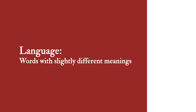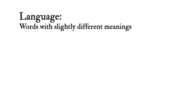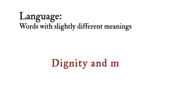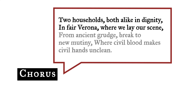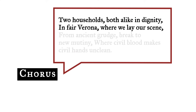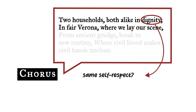Sarah, one thing I noticed about Shakespeare's language is that he sometimes uses familiar words, but in a different way. Take the words dignity and mutiny, for example. That's right, Ralph. When Shakespeare says that the two households are alike in dignity, he doesn't mean that they have the same level of self-respect. He means that both families belong to the same social class, the nobility, the upper level of Verona society. They're alike in their nobility.